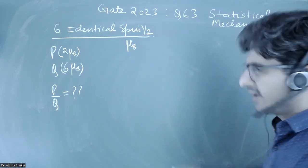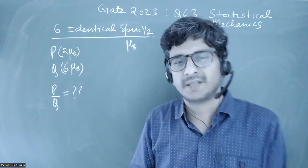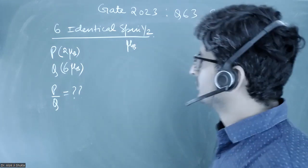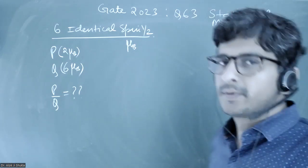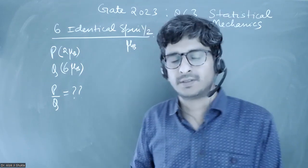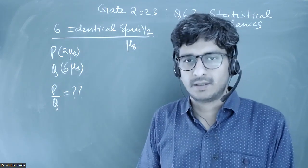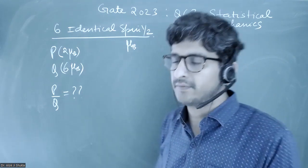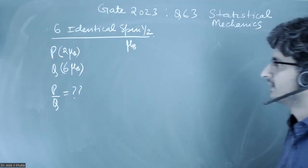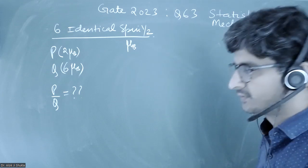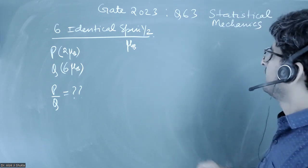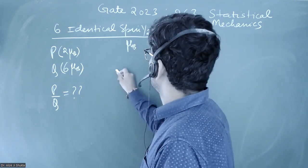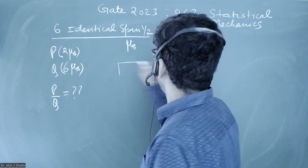I have been doing such questions with two spins, three spins, four spins, and five spins in class. There are a lot of problems of this type given in Reif — I would recommend students to read this part from Reif. This is a very simple and straightforward problem involving six identical spins.